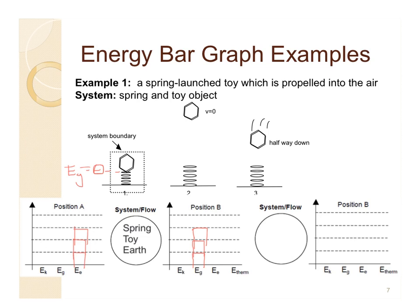Now we consider position C. The toy is falling back down; the spring looks like it's not compressed, but the toy is moving and is still above the gravitational energy equals zero point. So there's going to be some kinetic energy and also some gravitational energy, but no elastic energy. You could split it a couple ways — two bars on kinetic and one on gravitational, or one kinetic and two gravitational. The important idea is that the total amount of energy at the beginning equals the total amount of energy at any point in the problem. Energy is conserved.